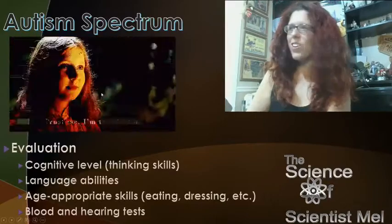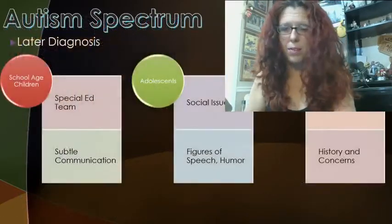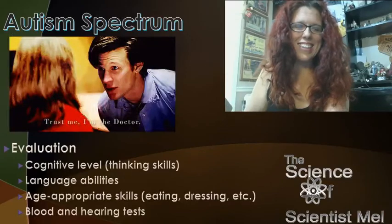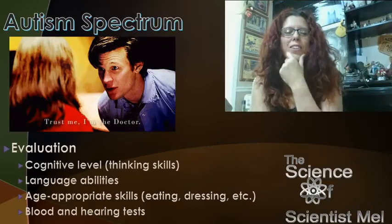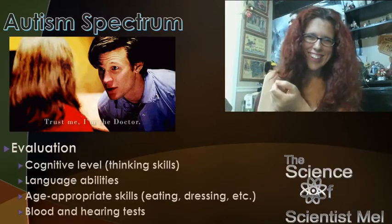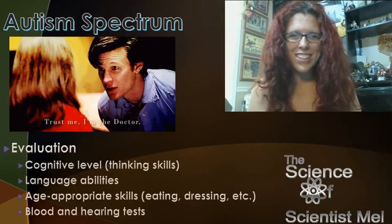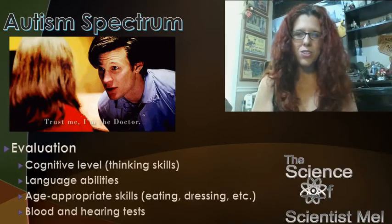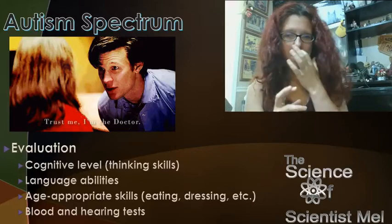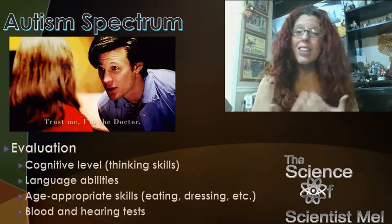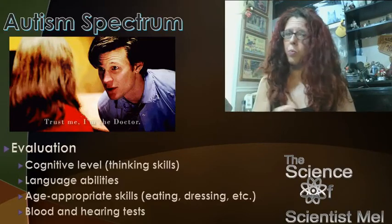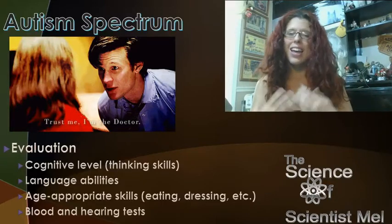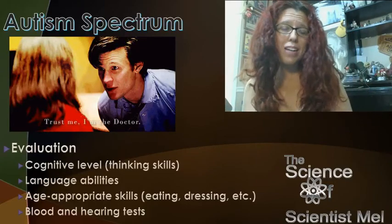During evaluation, they look at cognitive level, thinking skills, and language abilities. Depending on when someone is being screened, they look at age-appropriate skills like eating and dressing. Since it's a complex condition, they might also do blood tests and hearing tests.